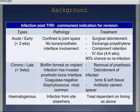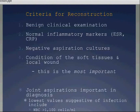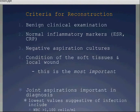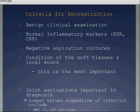The criteria for reconstruction really require a benign clinical examination, normal inflammatory markers, and negative aspiration cultures if you choose to do that. The condition of the soft tissues and wound is the most important factor when considering reconstruction. Joint aspiration from the literature has been shown to be important — values suggesting infection should be greater than 1,100 cells per milliliter and greater than 64% polymorphs would indicate that you shouldn't reconstruct. That was from a large retrospective review of 13,000 arthroplasties.